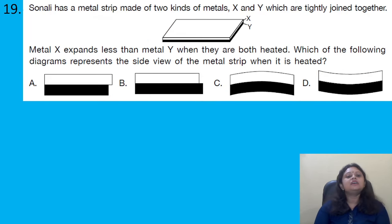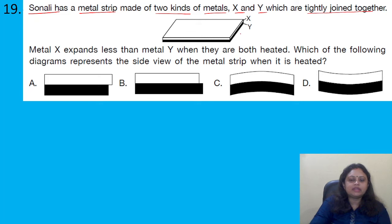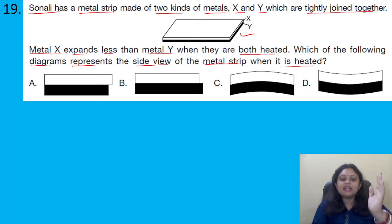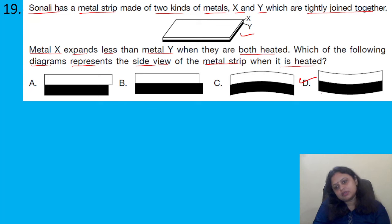Sonali has a metal strip made of two kinds of metals, X and Y, which are tightly joined together. Metal X expands less than metal Y when both are heated. Which diagram represents the side view of the metal strip when heated? Since metal Y expands more, the strip will bend toward the side of metal X. The correct answer is option D, as it shows the portion of metal Y expanded more compared to metal X.